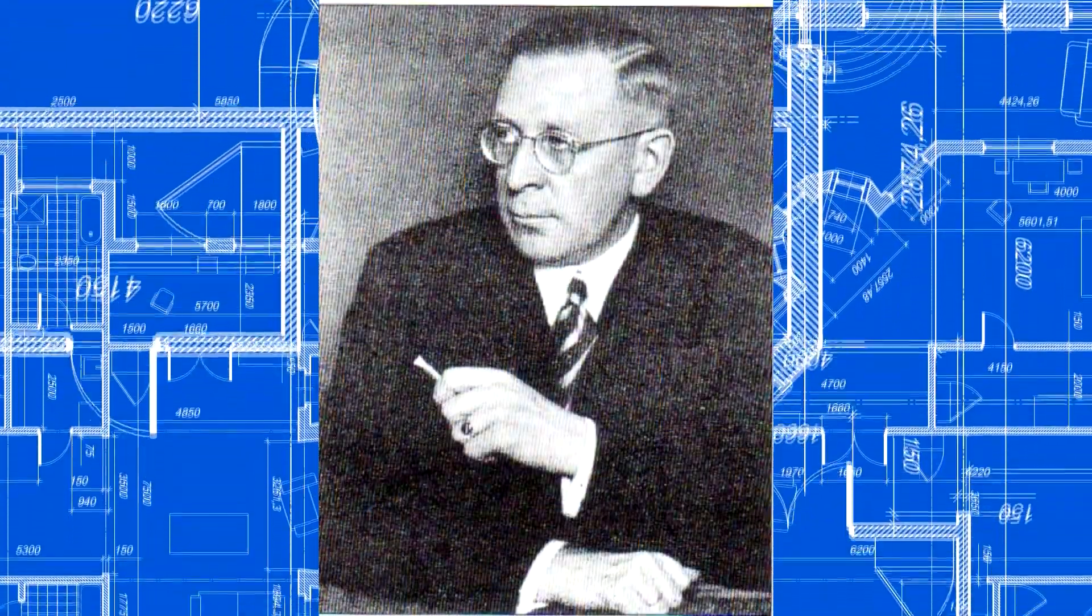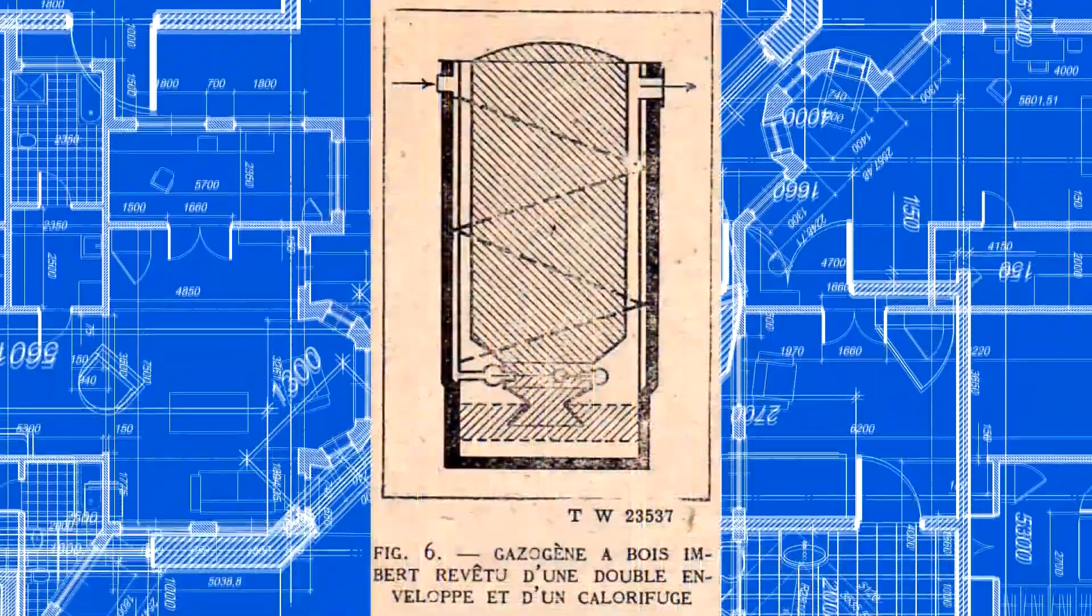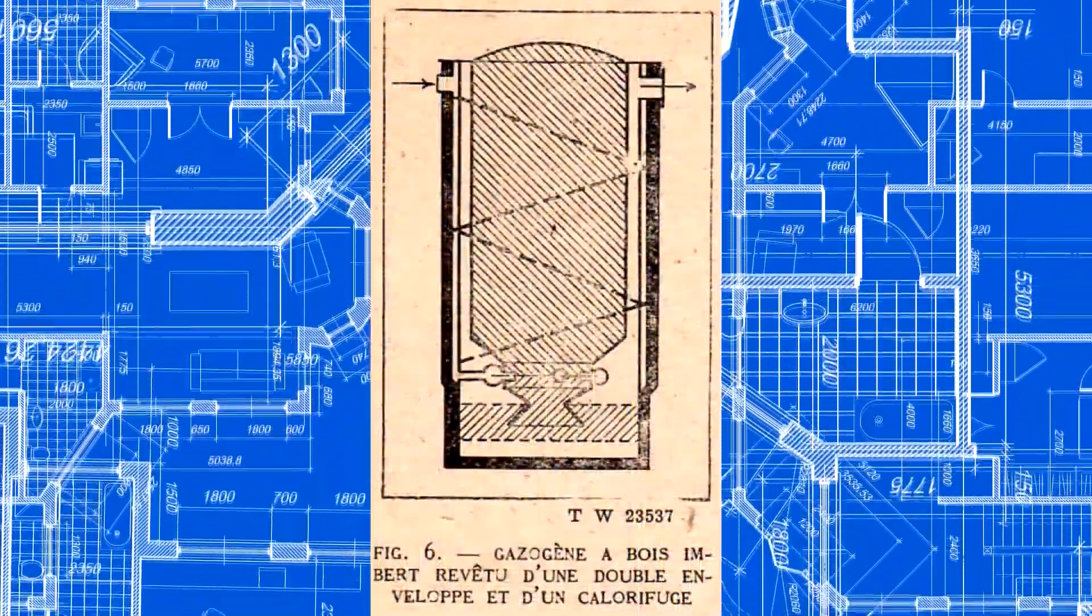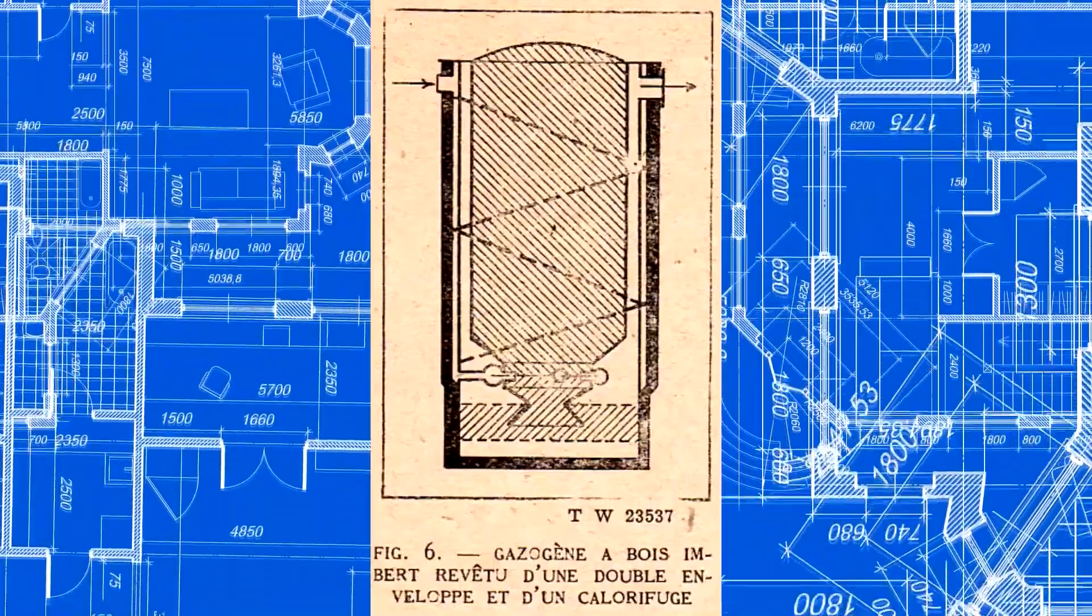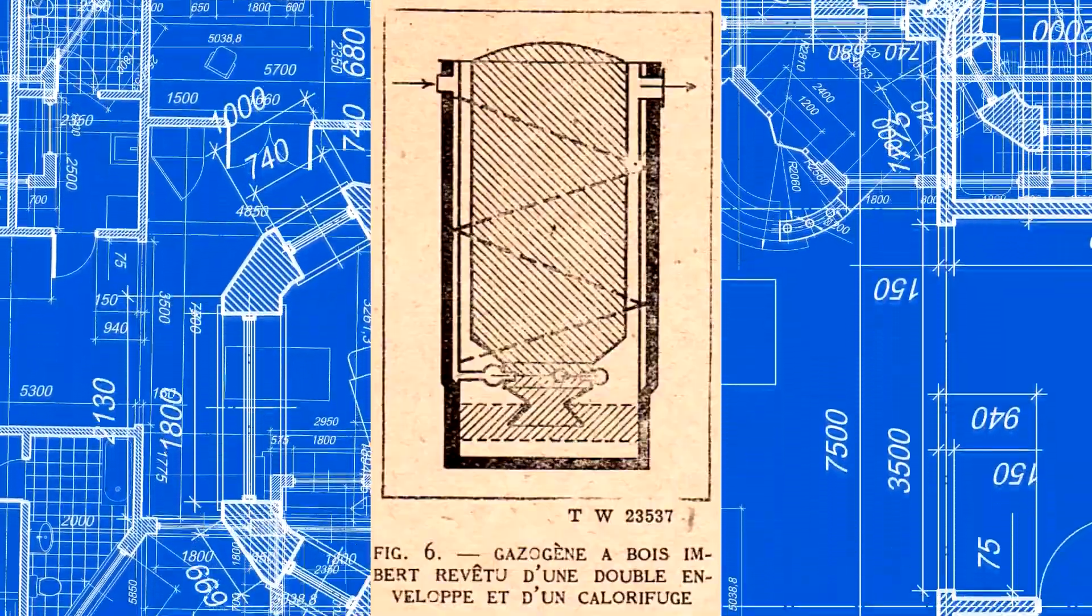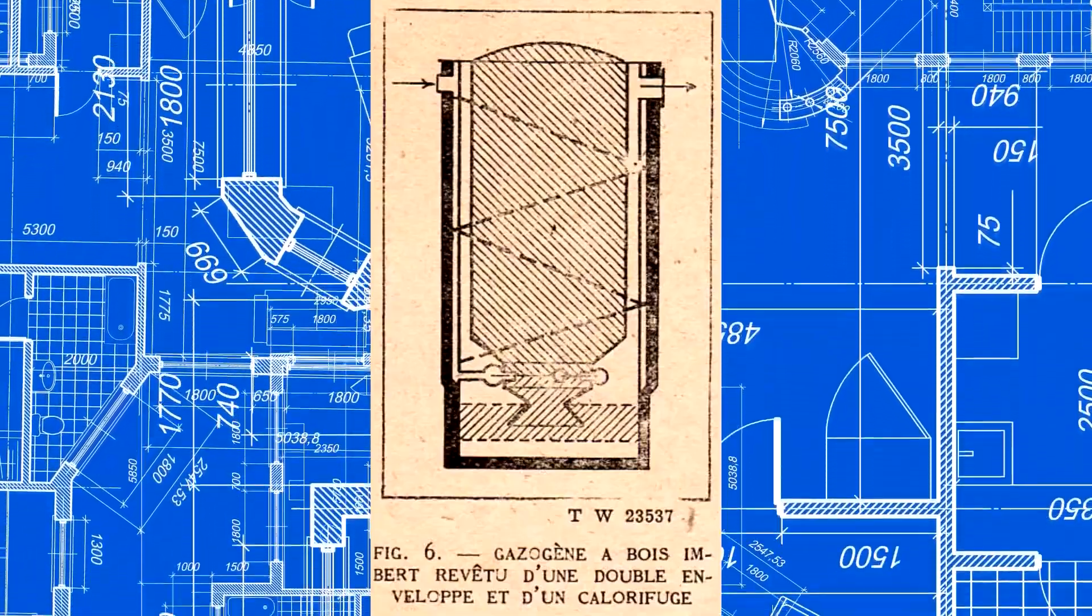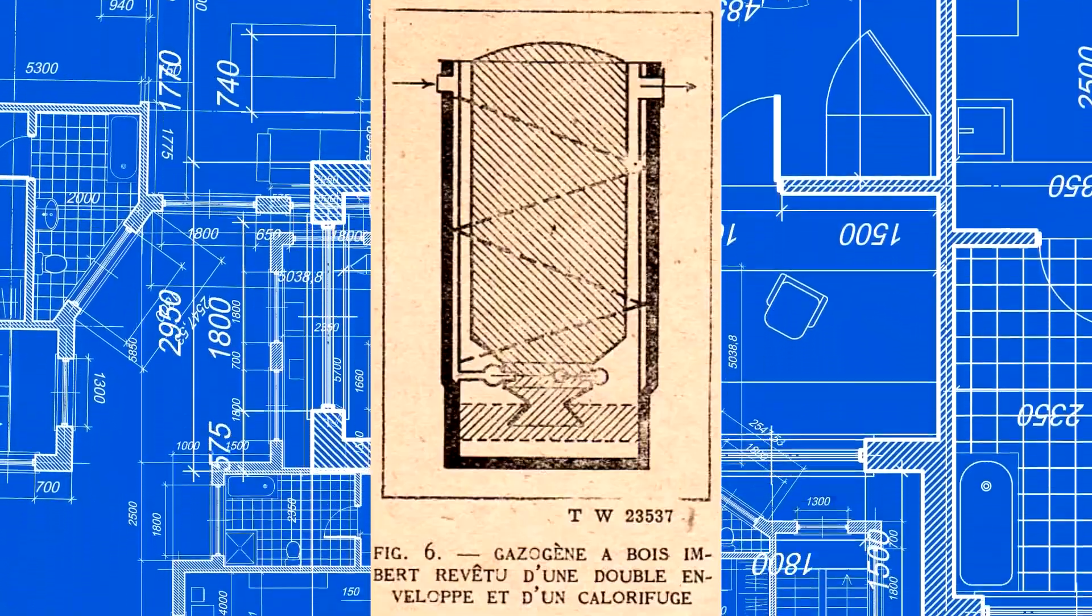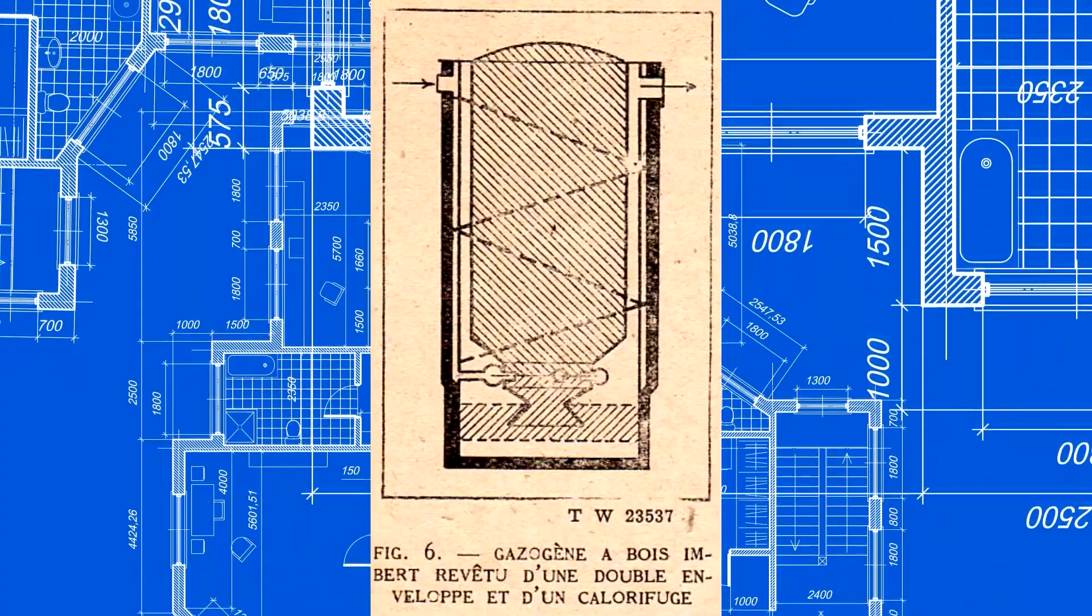Imbert's partner Lennel suggested making another jacket around the gasifier for air input so that the heat from the outer gasifier casing would not dissipate into the atmosphere but heat the incoming air. This allowed to raise the efficiency and put 35% humidity wood into a downdraft gasifier, not just 20%.